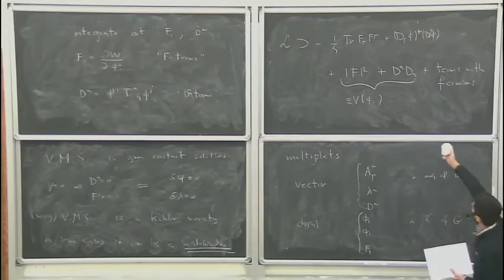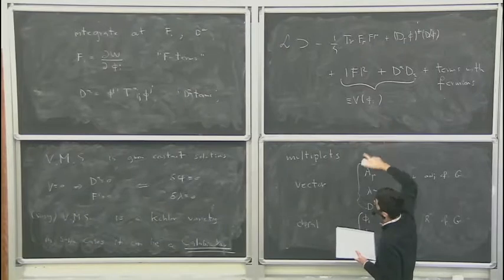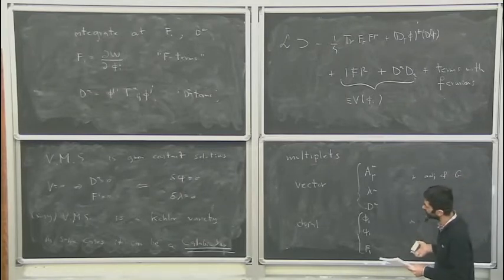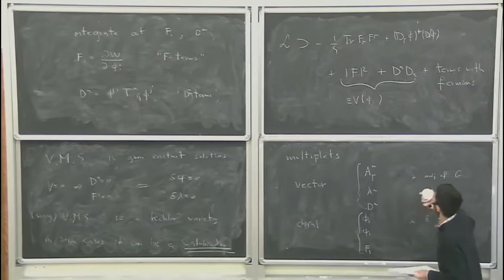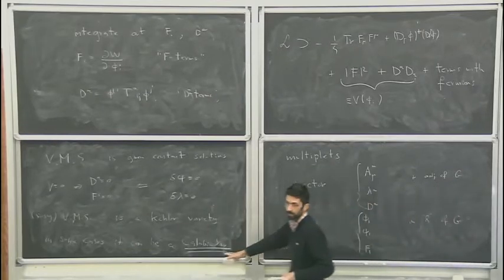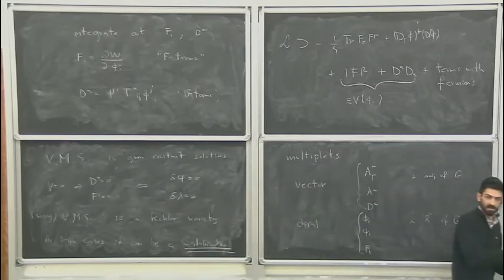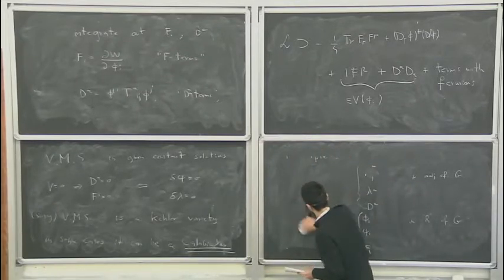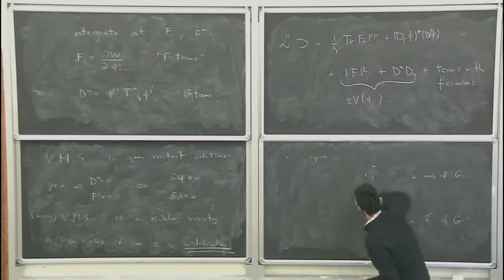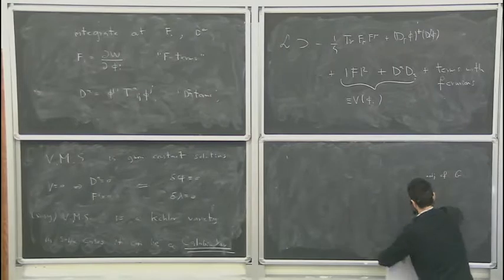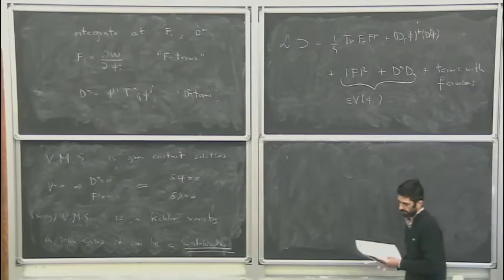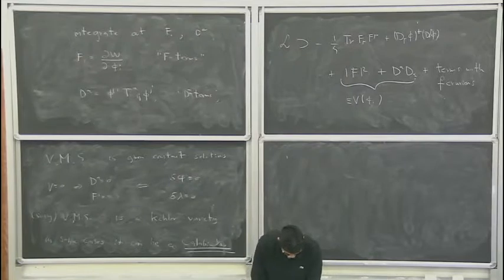On top of the generic form given by supersymmetry, we get constraints on the superpotential and gauge group such that they give a Calabi-Yau threefold. This narrows down the candidates further. But there are still many possible culprits, so we still have to find which one it is at the end. Let's take a break and then continue with the specific example.